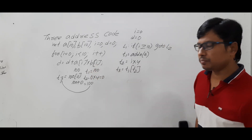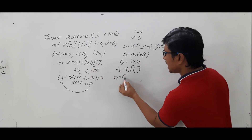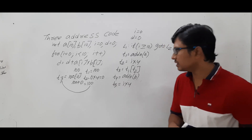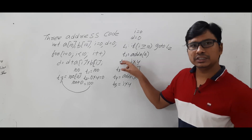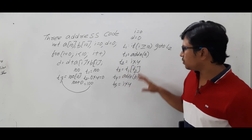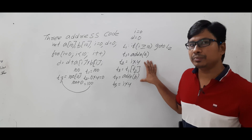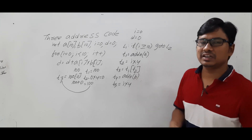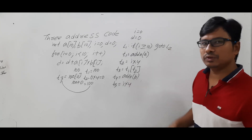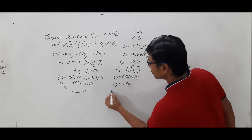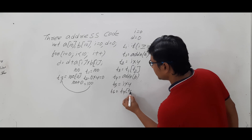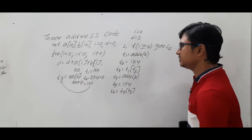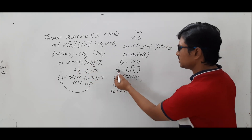Next, t4 = address of b. Then t5 = i * 4. Note: even though we already computed i * 4 in t2, we do not reuse it — code optimization is a separate phase; when generating three address code, we do not optimize. Then t6 = t4[t5], which computes the value at address b + (i * 4), giving b[i]. So t3 holds a[i] and t6 holds b[i], both for the initial i = 0.